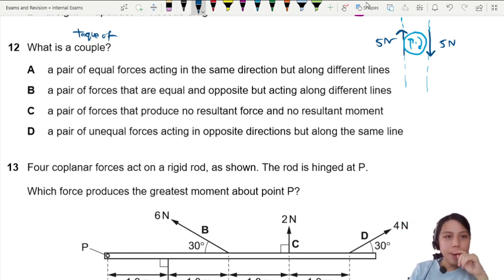So we gotta look and see which one is it. Pair of forces, let's look at A: acting in the same direction but along different lines. Same direction? Hello, you need to be in different direction. Nope. B: equal and opposite but acting along different lines. Okay, sounds pretty correct.